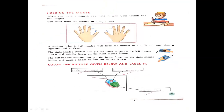Next, on page number 33, we have to learn how to hold the mouse. When you hold a pencil, you hold it with your thumb and two fingers. You must hold the mouse in the right way. A student who is left-handed will hold the mouse differently than a right-handed student. Right-handed students will put the index finger on the left mouse button and the middle finger on the right mouse button.